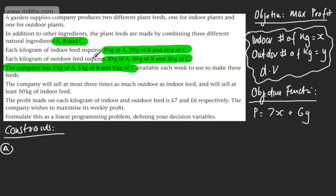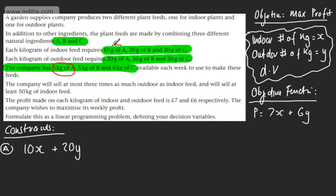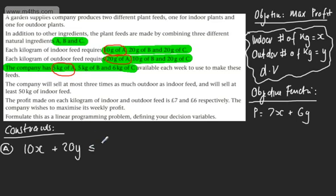Let's consider ingredient A. For the indoor feed we need 10 grams per kg, and I'm working in grams. So that's 10x. For the outdoor feed we need 20 grams per kg, so that's plus 20y. We've got 5 kilograms in total, which is 5,000 grams. So the rough inequality is 10x plus 20y is less or equal to 5,000.